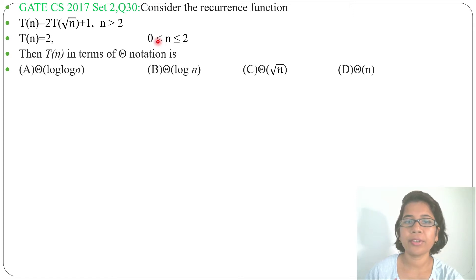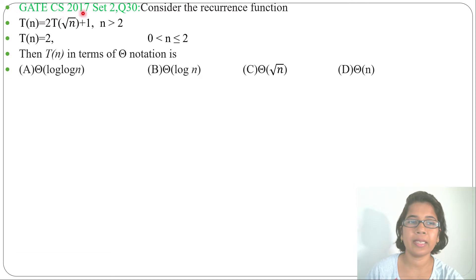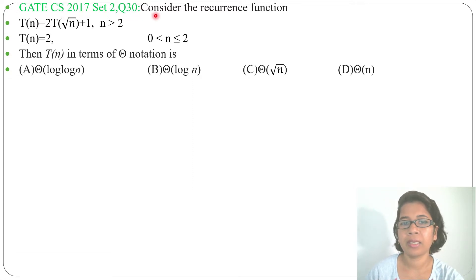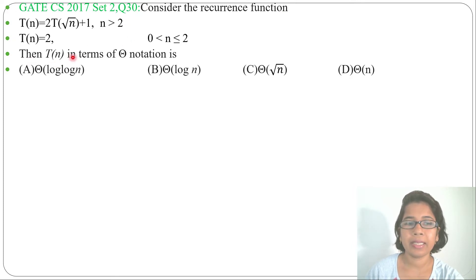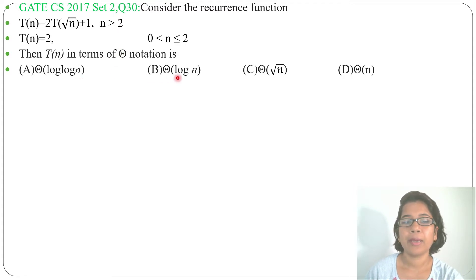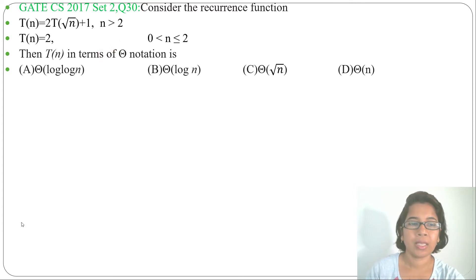Let's have one previous question of algorithm analysis. This question was asked in GATE-CS 2017, set 2, question number 30. Consider the recurrence function — a recurrence relation is given. T(n) in terms of theta notation is asked, with four options given. It is mainly asking what will be the time complexity for this recurrence relation.